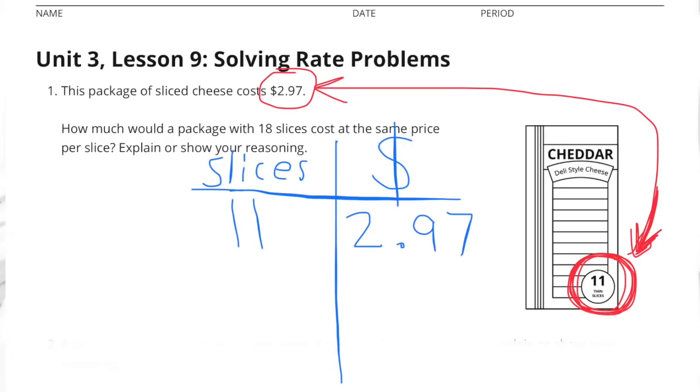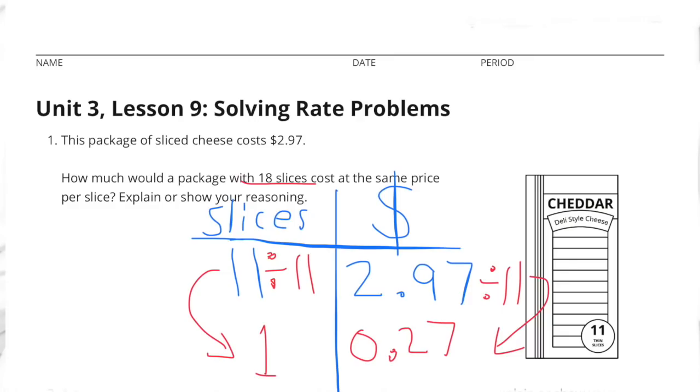Well, if you look at the drawing of the package of cheese, it shows that there's 11 slices. So there's 11 slices for $2.97. So I made a table with the slices on the left and the dollar amount on the right. I started out with 11 slices for $2.97.